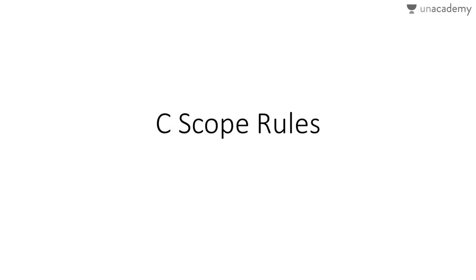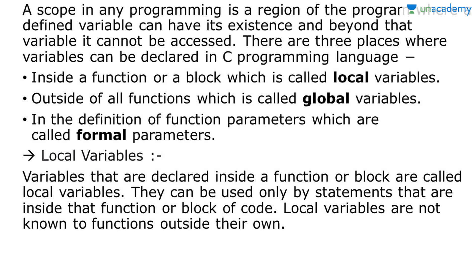Today we are going to discuss scope rules. Scope, in any programming language, is a particular region of the program where a defined variable can have its existence — beyond that, the variable cannot be accessed. Scope is essentially the lifetime of a variable. There are three places where variables can be declared: inside a function or block (local variables), outside all functions (global variables), and in function parameter definitions (formal parameters).